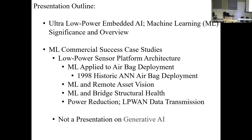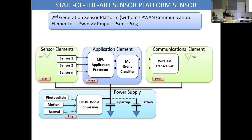I'm distinguishing between generative AI and machine learning. I'll give a little history of machine learning — it's not obvious and not well documented in the literature. I'll start by talking about some of the first successful instances of embedded machine learning. When I look at the architecture of a typical remote sensor system, you have sensor elements, an application processor, machine language event classifier, and a wireless element.